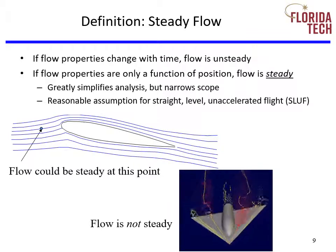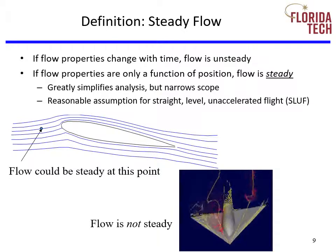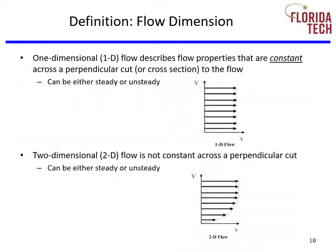Steady flow is a reasonable assumption for straight, level, unaccelerated flight, but it would be inappropriate for a rapid pitch-up maneuver. While steady flow applies to properties constant with time, a one-dimensional flow describes properties constant across a cross-section perpendicular to the flow. Two-dimensional flow is not constant across a perpendicular cut. A one-dimensional flow can be unsteady, and a steady flow can be two-dimensional — they are independent flow classifications. Steady relates to time, whereas one-dimensional relates to orthogonality.